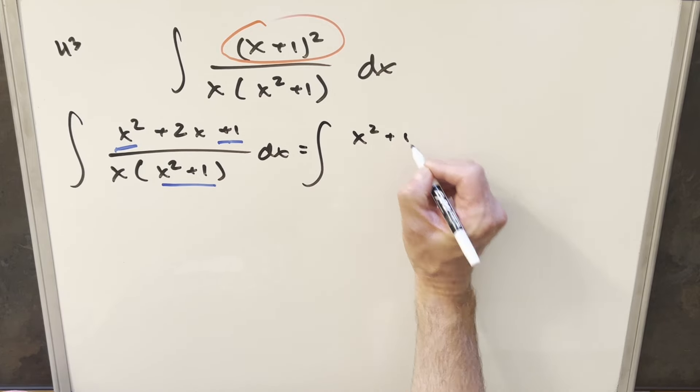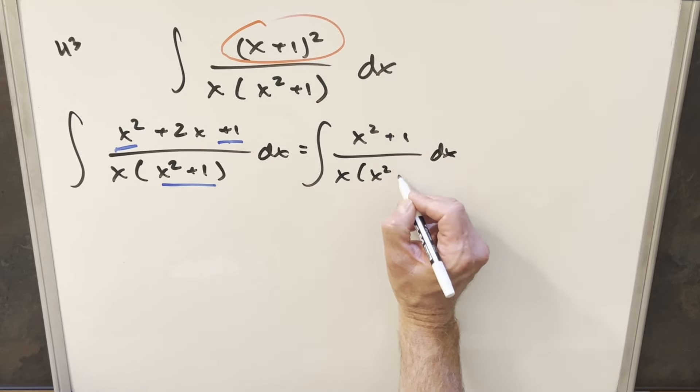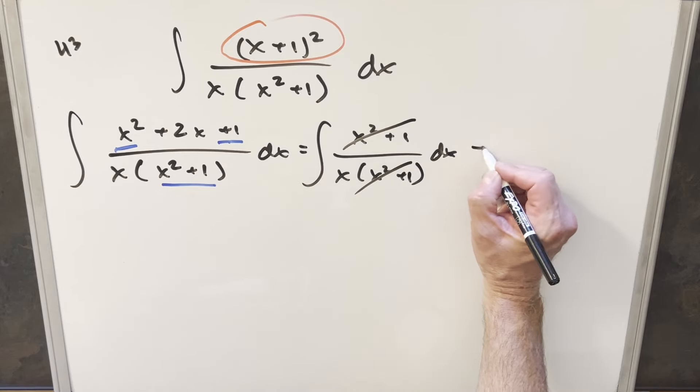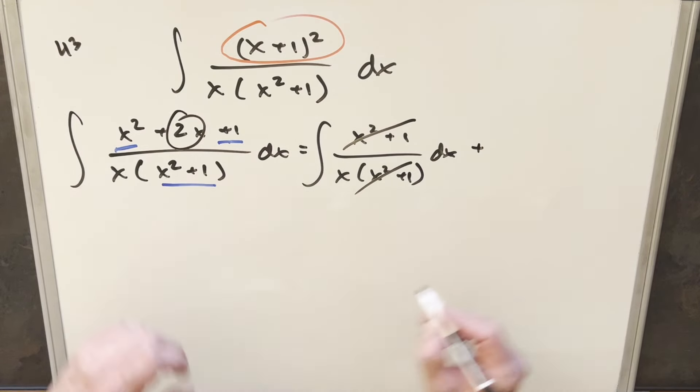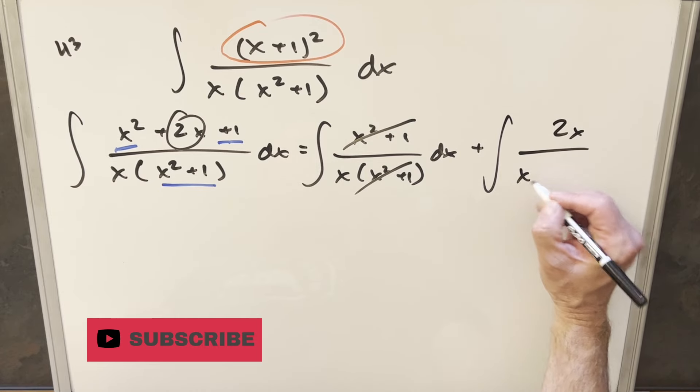In this first integral, let's just use x²+1, and we'll have this over the same denominator. And that way this term is just going to cancel with this, but we still have this 2x to bring into a separate integral. So here we're going to have just 2x over this other stuff.